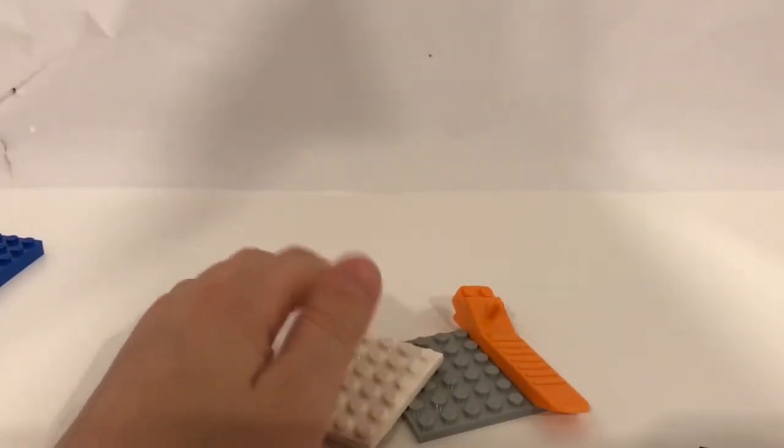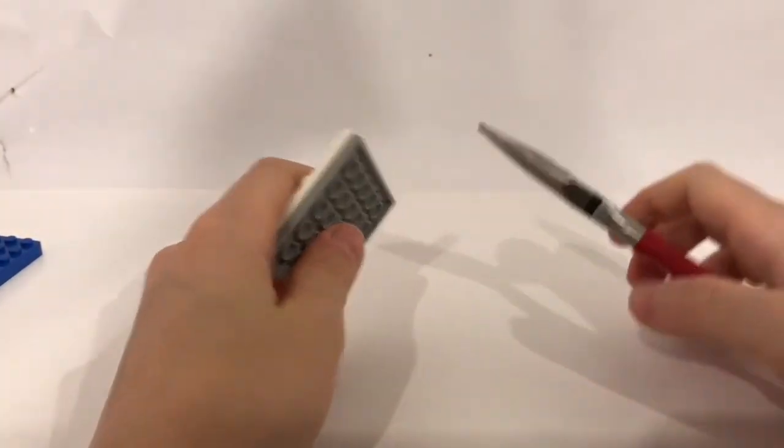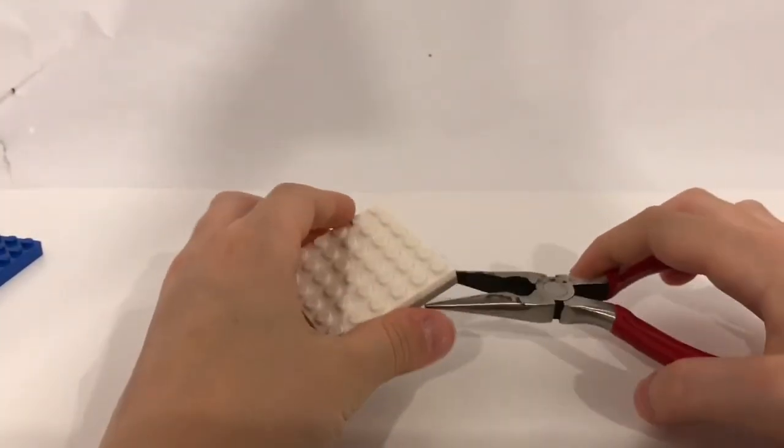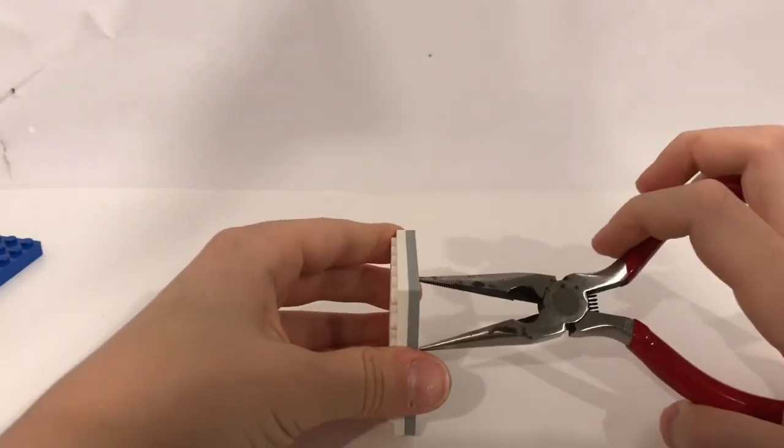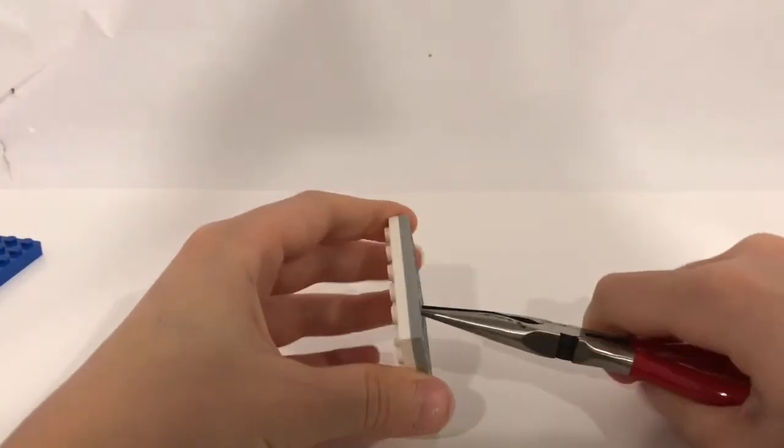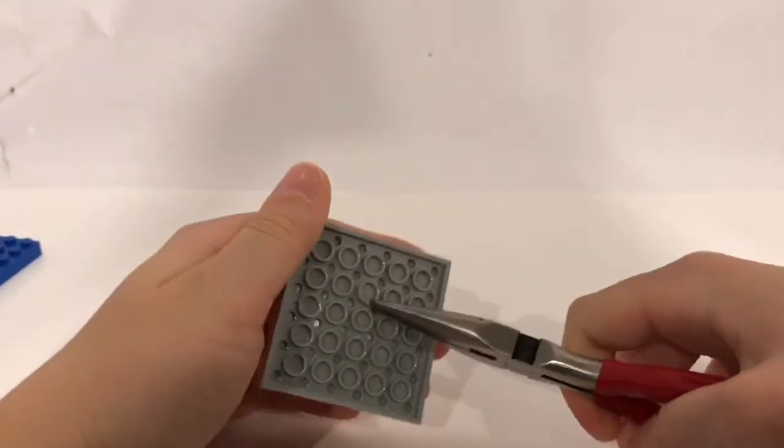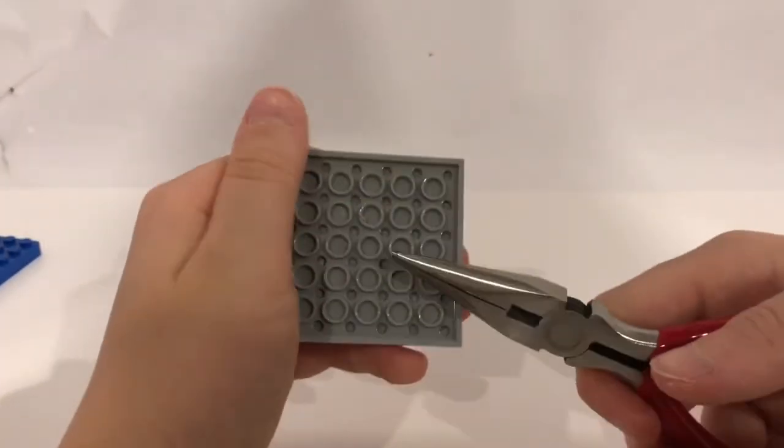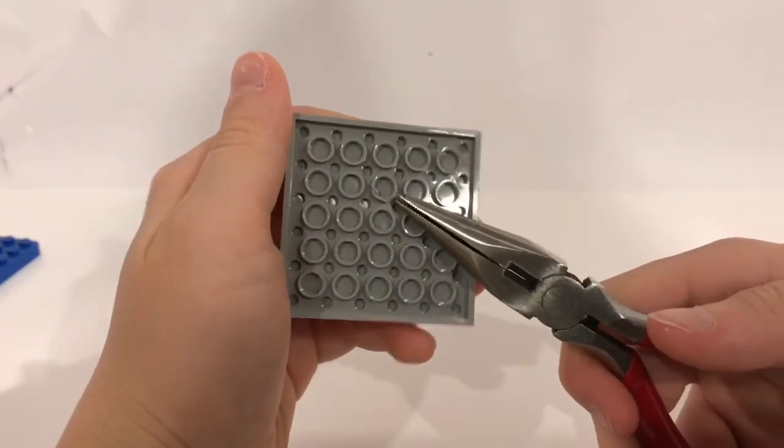Now we'll try the needle nose pliers. Back together. Now I've got the needle nose pliers and I'm going to detach them. First I'll try hanging onto a circle. That didn't work. Plus it made a pretty big dent in that.